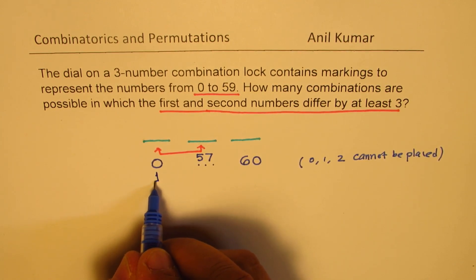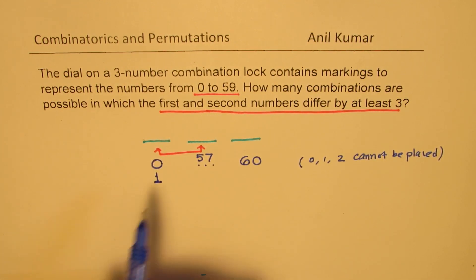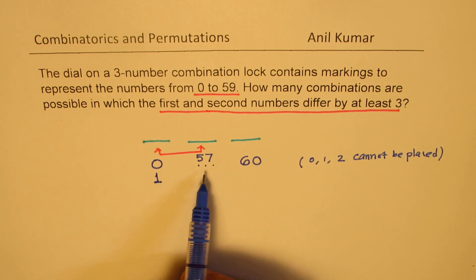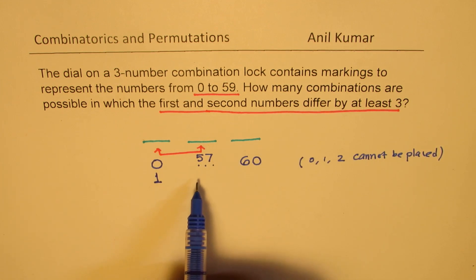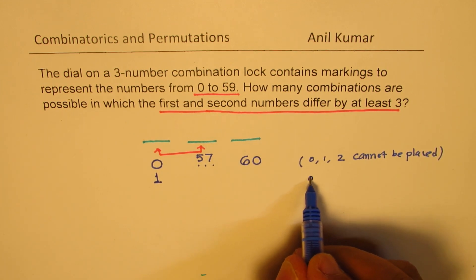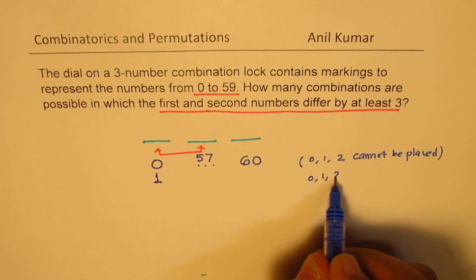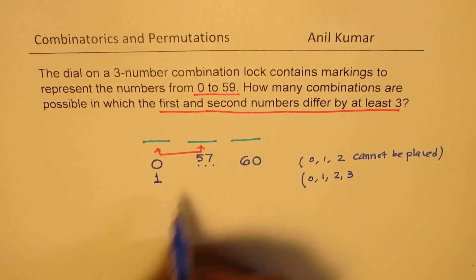Now let's see what happens when I place 1 here. When I place 1 here, this number has to have a difference of at least 3. So I cannot place 0, I cannot place 1, I cannot place 2, I cannot place 3. I can place 4 here.